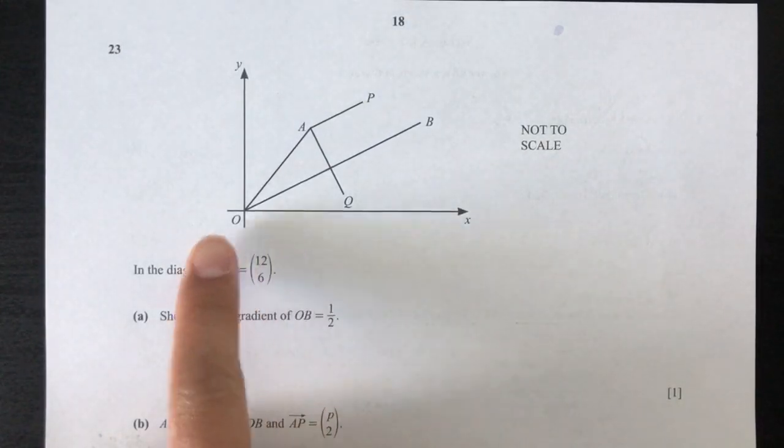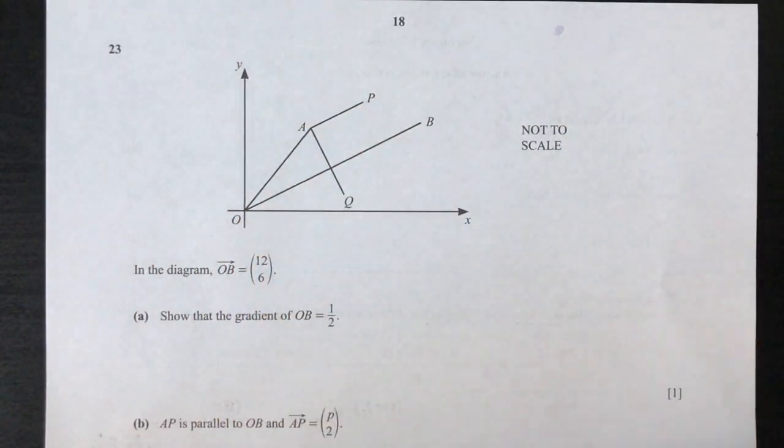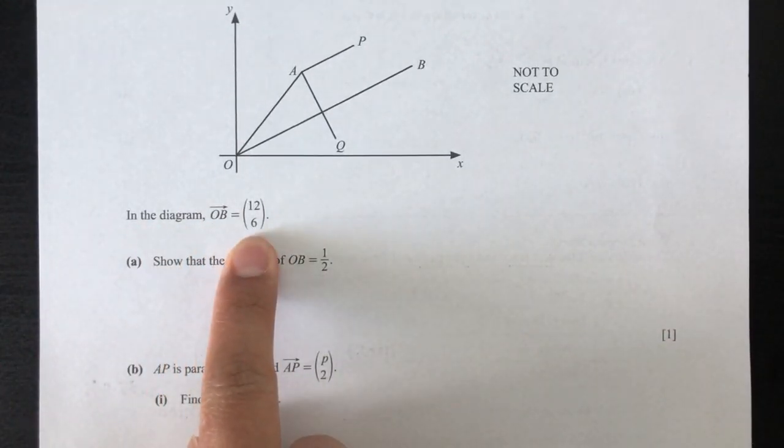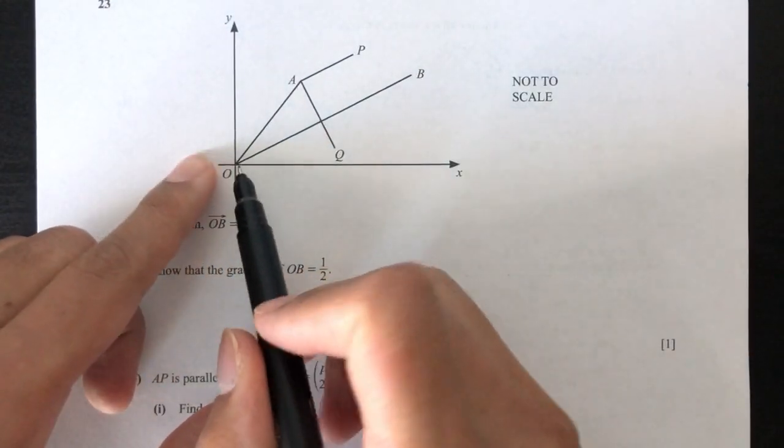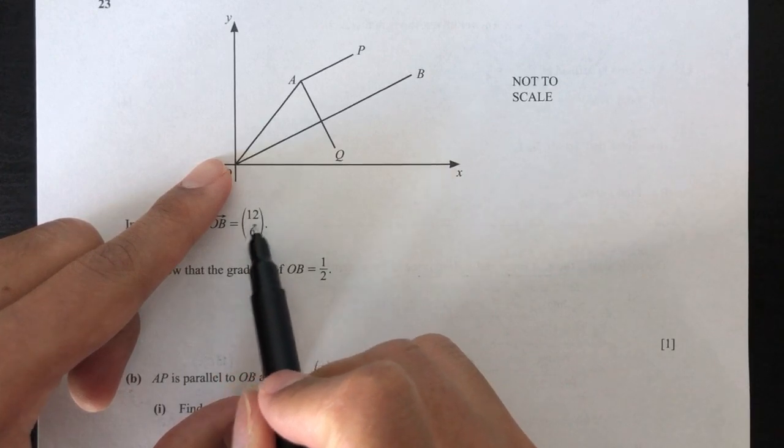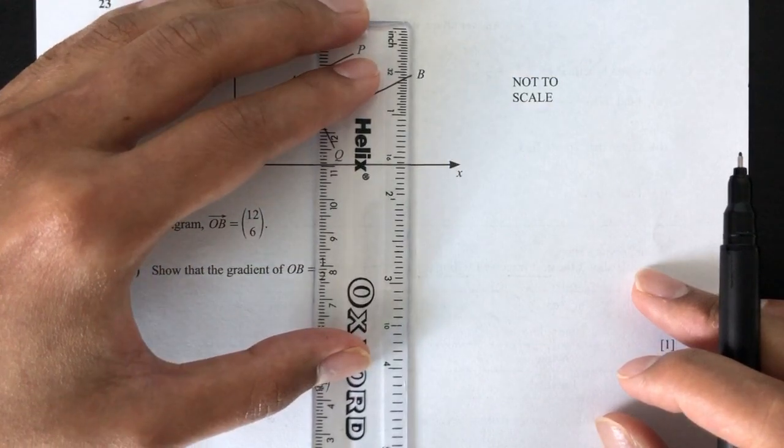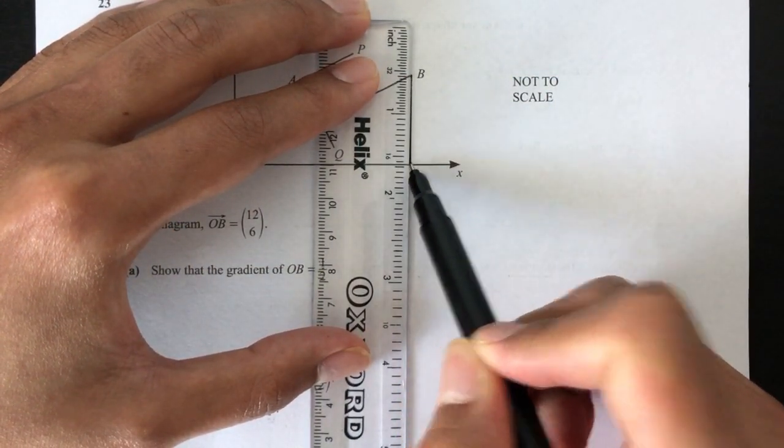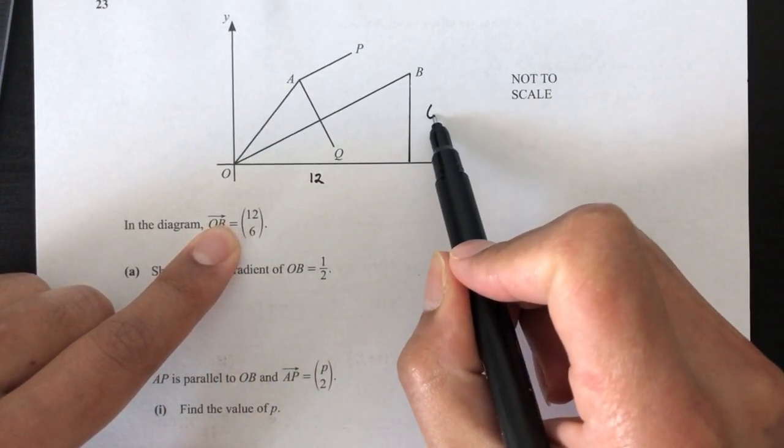So here we have a graph of x-axis and y, and we have point A, B, P, and Q shown in the diagram. Now we have the point B given to you by 12, 6. So what does this mean? It means that this is O, this is the horizontal distance, it is 12, and the height will be 6. So let's draw this here so we can understand what it means. So 12 means that this is 12, and it's 6.